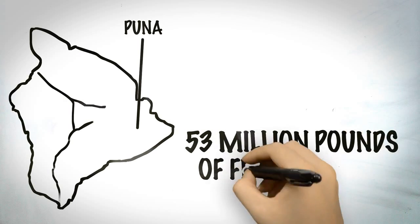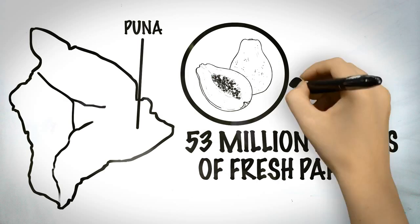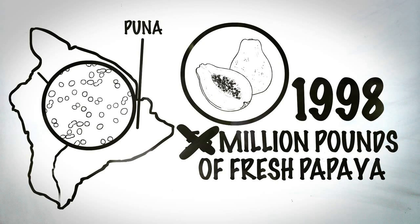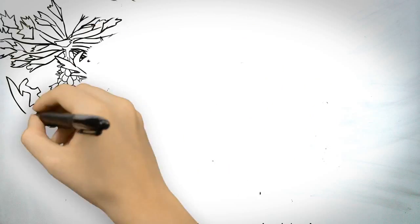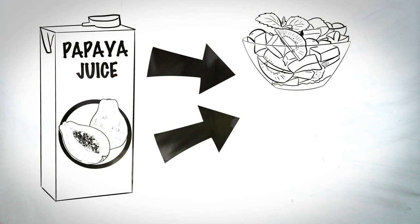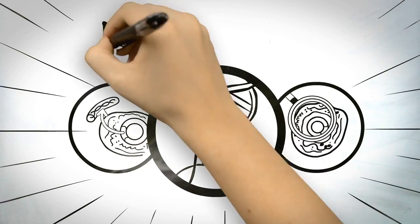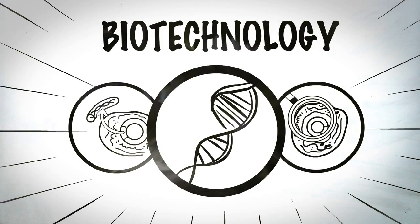Fifty-three million pounds of fresh papaya were being produced annually when PRSV was first discovered in Puna in 1992. By 1998, that amount had been cut in half to 26 million pounds. The crops and livelihood of farmers were being destroyed in front of their eyes. Moreover, for consumers, the availability of fresh papaya and papaya juice for fruits, salads, smoothies, and other products were threatened. A powerful new tool, biotechnology, was now available to fight back.